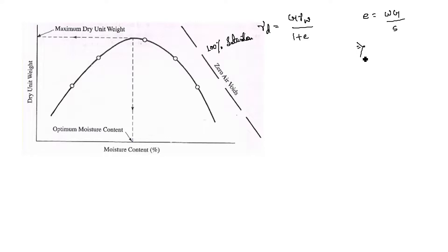For 100 percent saturation, the value of S is 1. Therefore, E can be written as W times G.